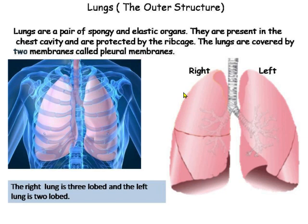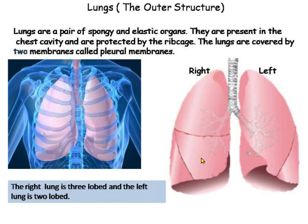Just as the chloroplast is covered by two membranes, similarly the lungs are also covered by double membranes. Between these two membranes there is a fluid called pleural fluid. This pleural fluid increases the flexibility of the lungs so that when we breathe in and breathe out, there is proper expansion and constriction of the lungs.